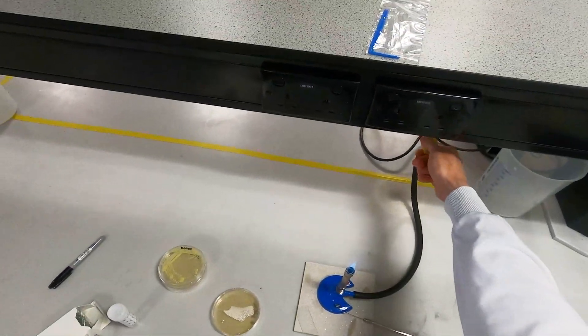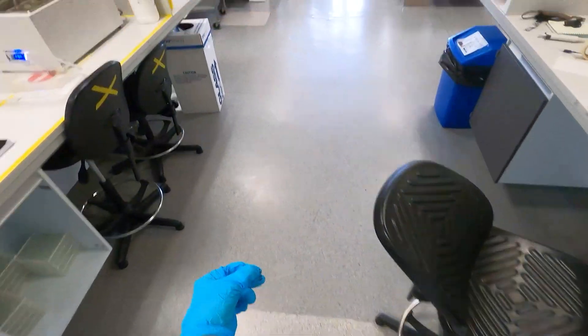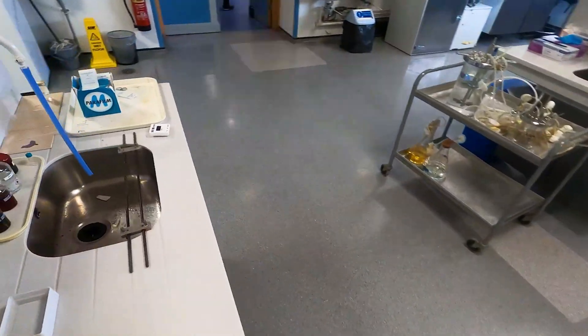Now you need to turn your Bunsen off, go get some gloves on and put your safety goggles on. Now you need to make your way over to the sink to start your Gram stain.